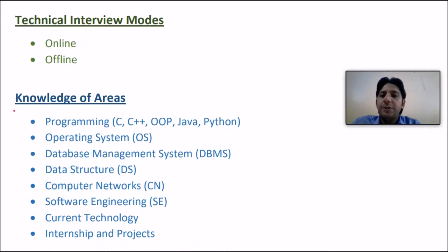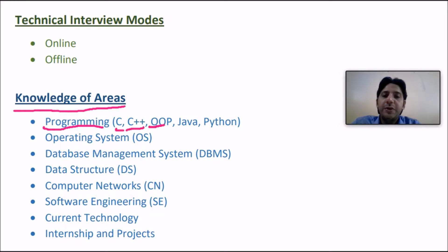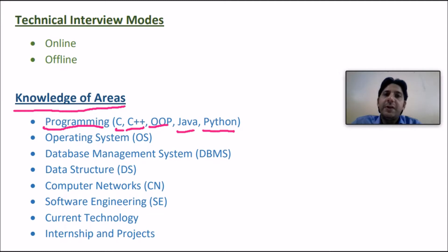For the technical round, knowledge of different areas is required. The first area is programming — the basic knowledge of C, C++, and object-oriented programming is required. Everybody must know what overriding and overloading are, what pointers are, how objects are created, what classes are, what different functions and data types are. Knowledge of Java and Python will give you an extra advantage.